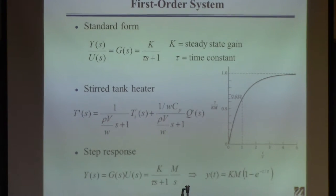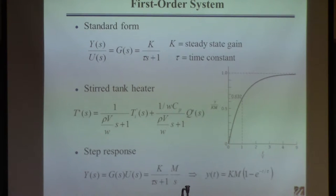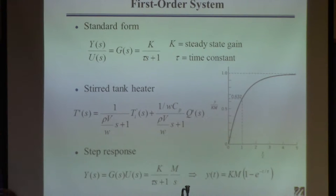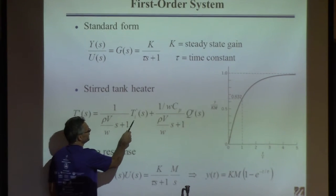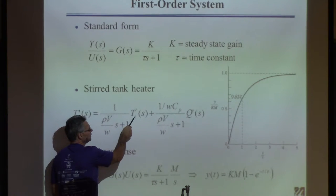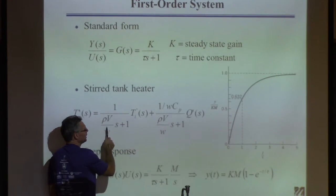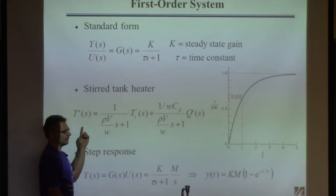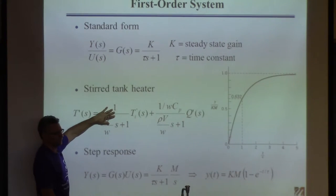If you change the inlet temperature by 10 degrees, the tank temperature will increase and finally go up 10 degrees — inlet temperature goes up 10 degrees, the tank temperature will go up 10 degrees too, eventually. If you increase Q, the temperature will also go up, and how much depends on the fluid flow through the system and the heat capacity of the fluid.